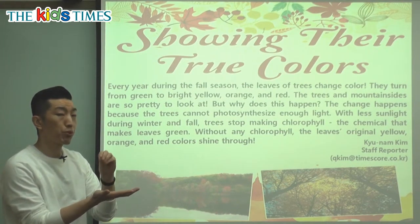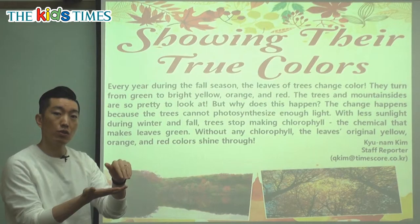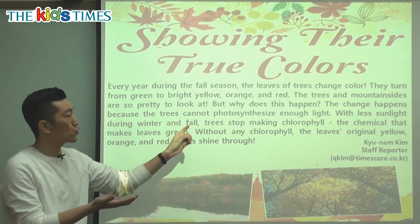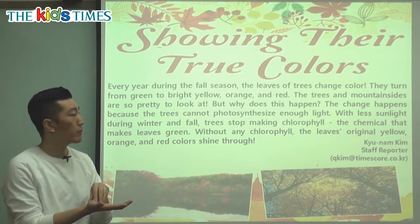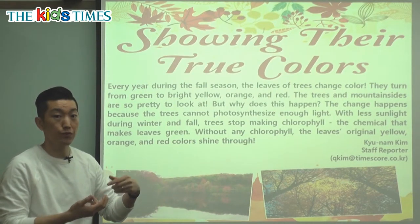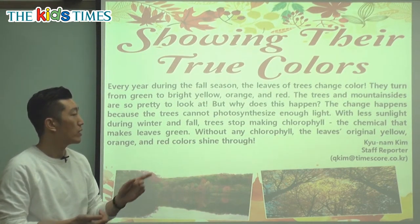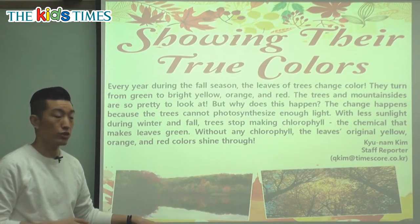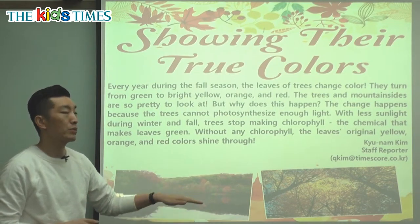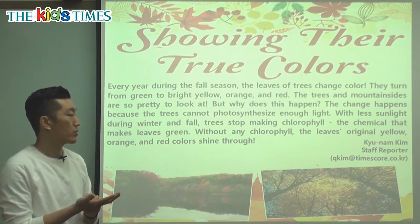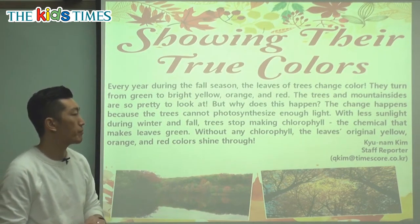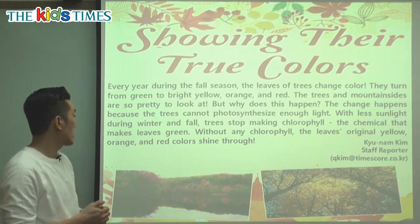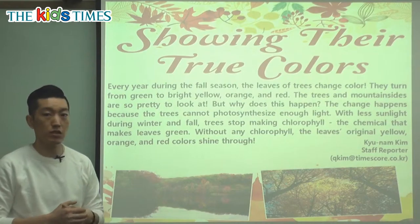When the leaf takes the sunlight, it starts making its own food, and that process — the steps of making their own food with sunlight — is called photosynthesis. They cannot make enough chlorophyll or food inside the leaf if they don't have enough light. Because the sunlight and daylight is getting shorter and shorter, they're not able to make as much food. That's why they're losing their green color. So without any chlorophyll, the leaves' original yellow, orange, and red colors shine through.